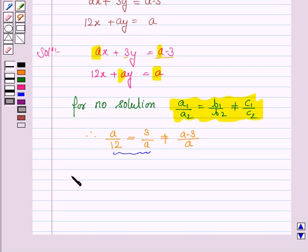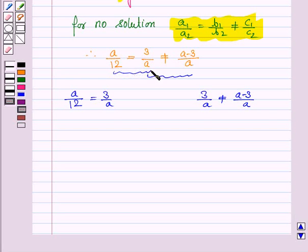Now using first two we have A upon 12 equals 3 upon A, and using second and third we have 3 upon A is not equal to A minus 3 upon A. We first use first and second, and then we use second and third.